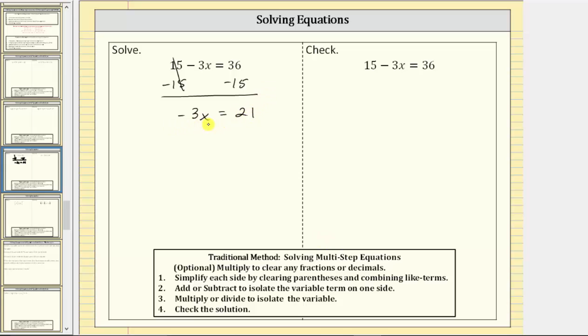So the equation negative three x equals 21 is equivalent to the given equation, except now the variable term is isolated. The next step is to multiply or divide to isolate the variable and solve the equation. You need to be careful here because the negative three and the x are attached by multiplication. Negative three x means negative three times x. Therefore, to undo the multiplication and solve for x, we need to divide both sides of the equation by negative three.